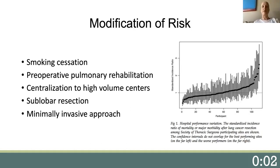We have suggested some ways to modify risk, such as sub-lobar or minimally invasive approaches. Smoking cessation, while a challenging endeavor, can decrease perioperative risk, lung cancer-specific mortality, and also all-cause mortality in lung cancer patients. Preoperative exercise therapy was found in a 2017 Cochrane review to reduce post-operative pulmonary complications and length of stay. However, the number of studies available in the meta-analyses were low, thus strong recommendations could not be made based on the available evidence. Finally, centralization of lung cancer surgery to either high-volume or centers of excellence has been proposed as a means to decrease operative risk.